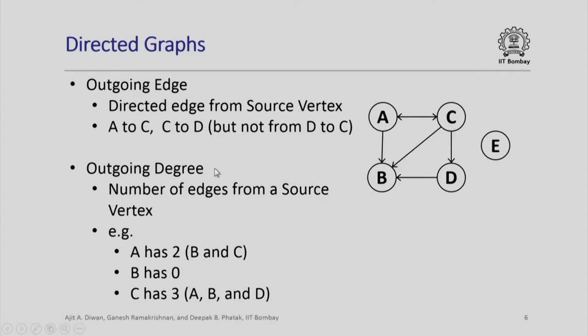An outgoing degree of a vertex is the number of edges which emanate out of a source vertex. For example, A has outgoing degree 2, because it has two edges going out from A to C and A to B. B has outgoing degree 0, because there is no edge which goes out of B. C on the other hand has an outgoing degree of 3, because from C I have an edge to A, an edge to B, and an edge to D. E has 0 outgoing degree.